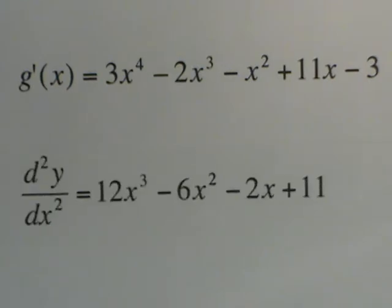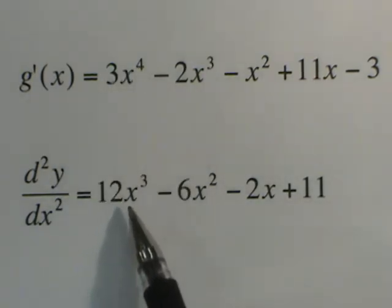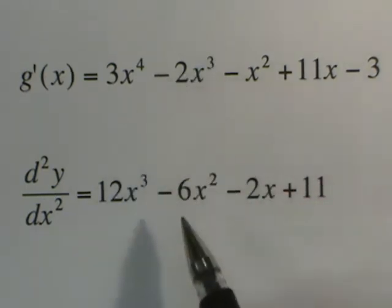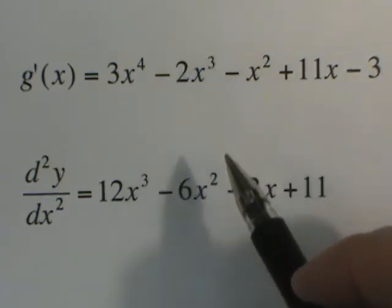Using the power rule, notice my notation. This is the notation for our second derivative. We would take 4 times 3 and get 12, x to the 4 minus 1, which is 3, so it's 12x cubed. 3 times negative 2 is negative 6x squared, because 3 minus 1 is 2.